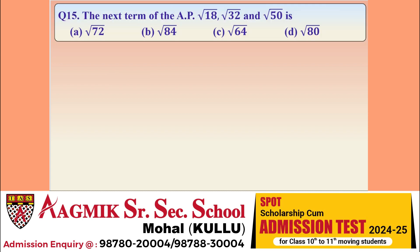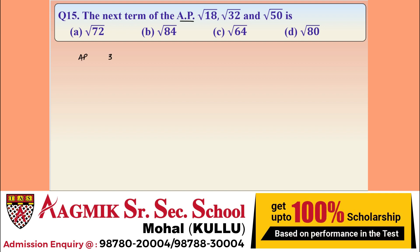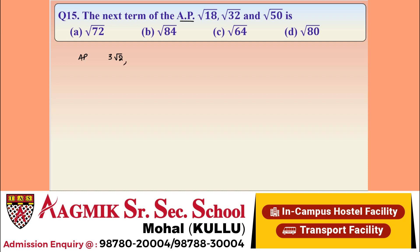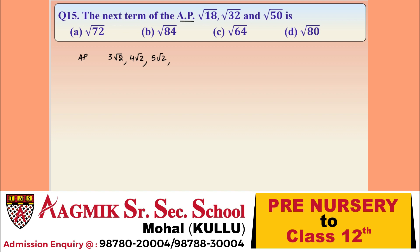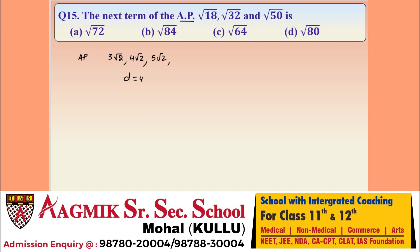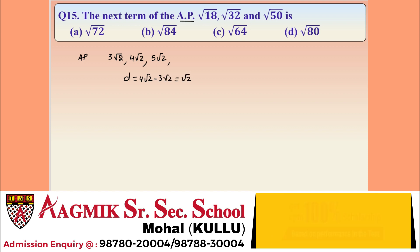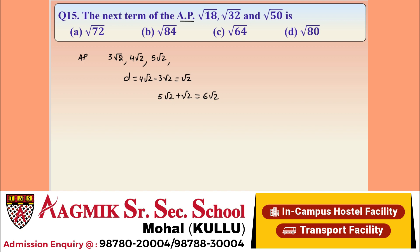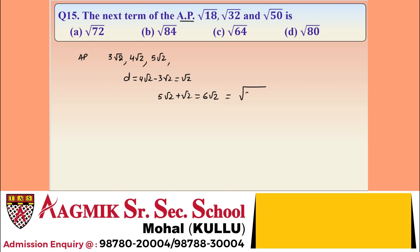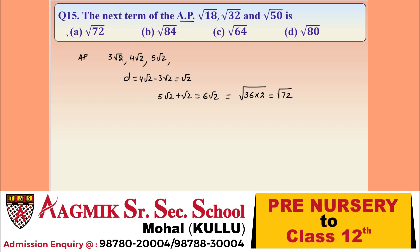Question 15: find the next term of the AP: √18, √32, √50. In simplified form: 3√2, 4√2, 5√2. The common difference is 4√2 - 3√2 = √2. The next term is 5√2 + √2 = 6√2. Taking 6 inside the root gives √72. Option A is correct.